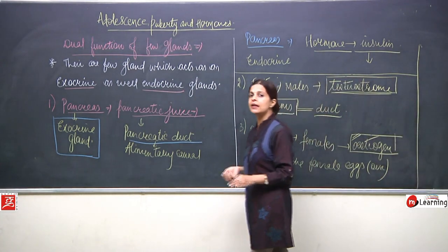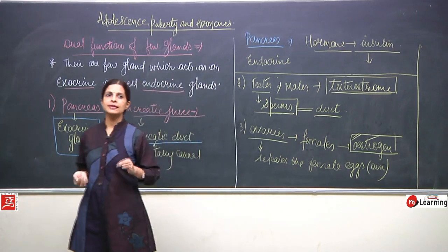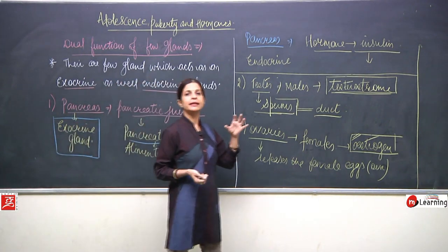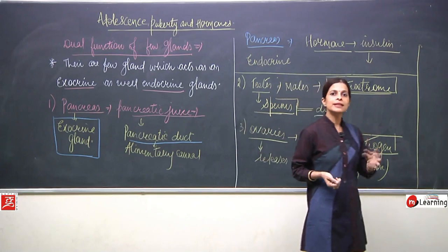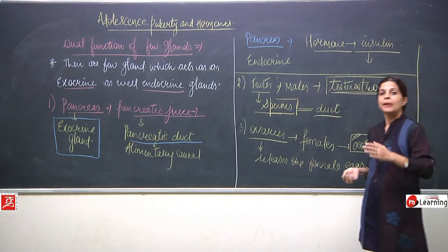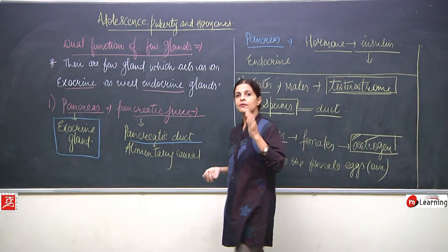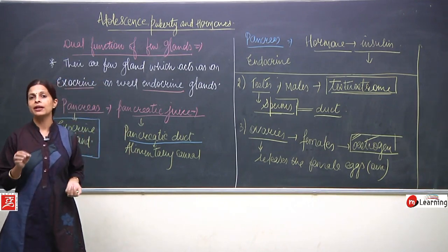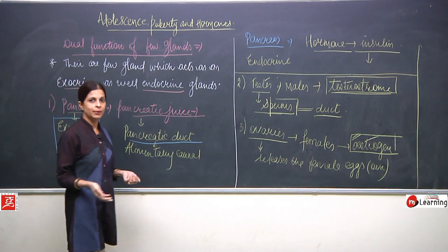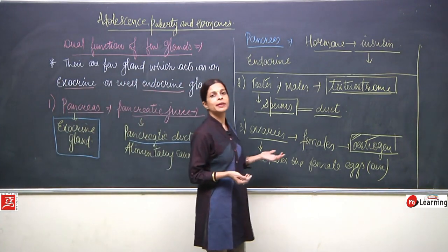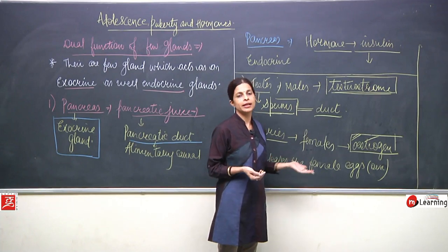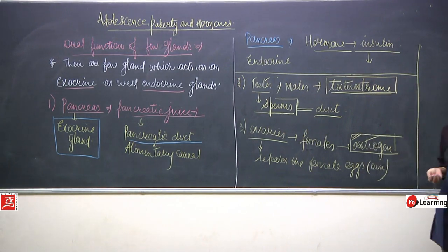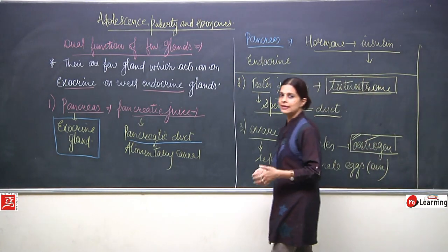Whenever secretion goes through some duct, it is an exocrine gland. Whenever the secretion gets mixed directly with the blood — whenever hormones are secreted by ductless glands — then these are endocrine glands. This is how there are few glands which act as both endocrine as well as exocrine glands.